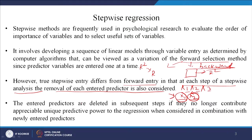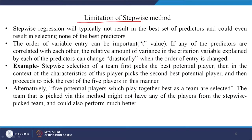The entered predictors are deleted in subsequent steps if they no longer contribute appreciable unique predictive power to the regression when considered in combination with the newly entered predictors. Sometimes the performance may increase — a symbiotic relationship — or it may decrease because of the new variable. Stepwise regression does have limitations: it will typically not result in the best set of predictors and could even result in selecting none of the best predictors.